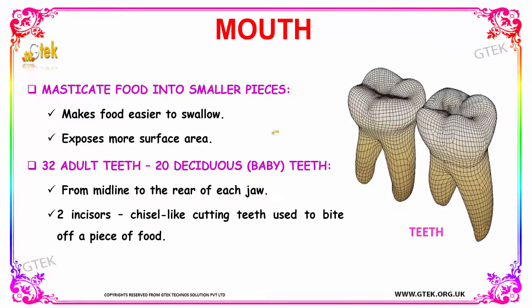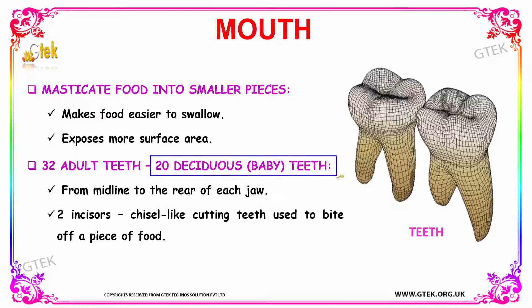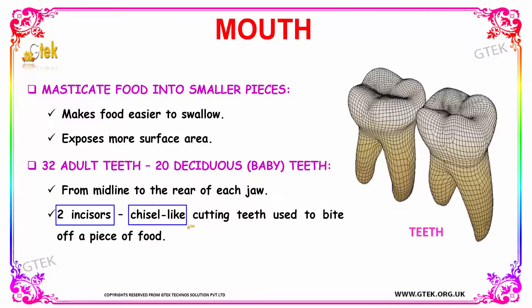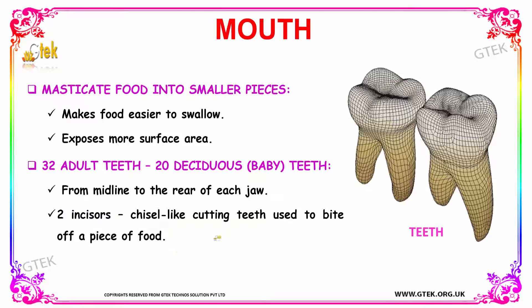To masticate the food into smaller pieces we have teeth. By cutting down the food into smaller pieces, it makes it easier to swallow and exposes more surface area. There are 32 teeth for an adult and 20 for a baby, which are known as deciduous teeth. They are arranged from the midline to the rear of each jaw. Everyone has two incisors, which are chisel-like cutting teeth used to bite a piece of food — they are very sharp.